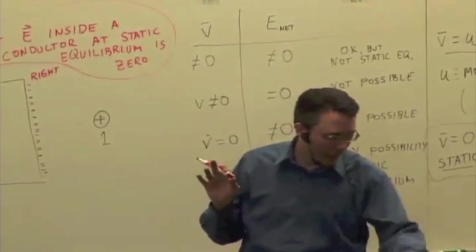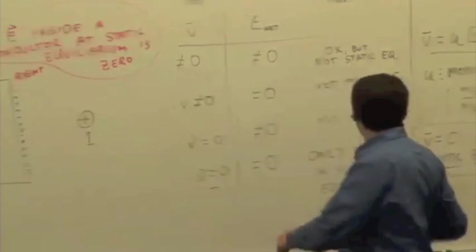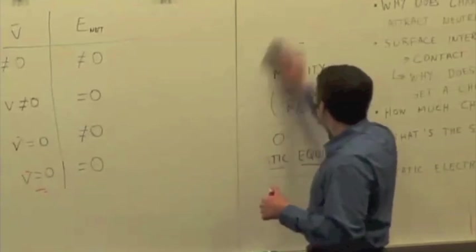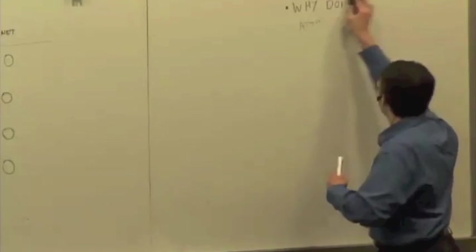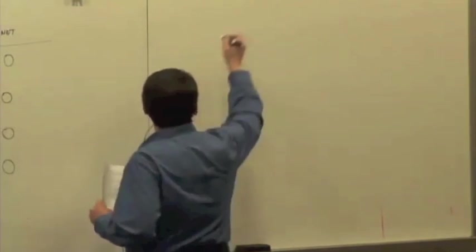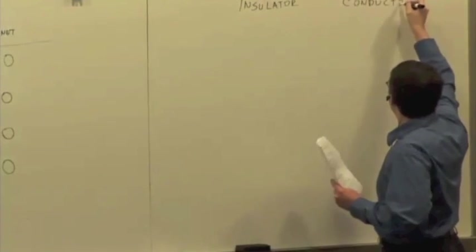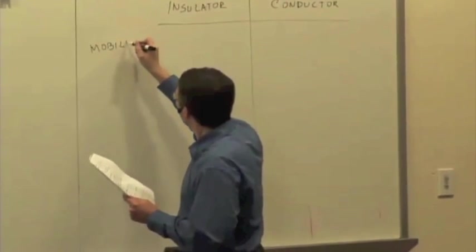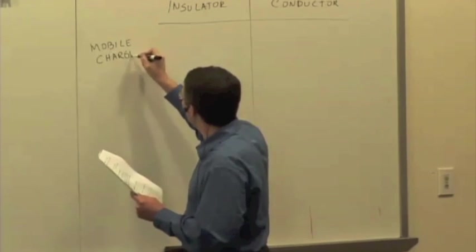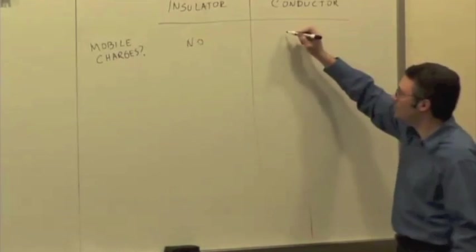I want to just sum up what we've talked about, and then if there's time, I think there will be at least a few minutes, one or two minutes. We'll try an example question, and then we'll do some more next time as well. So what have we talked about? We've talked about conductors versus insulators. Things to think about. Are there mobile charges? In an insulator, the answer is no. In the conductor, the answer is yes.